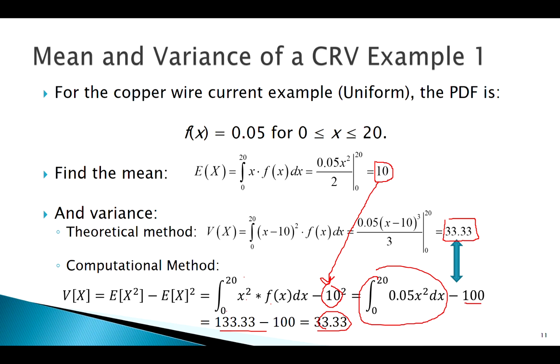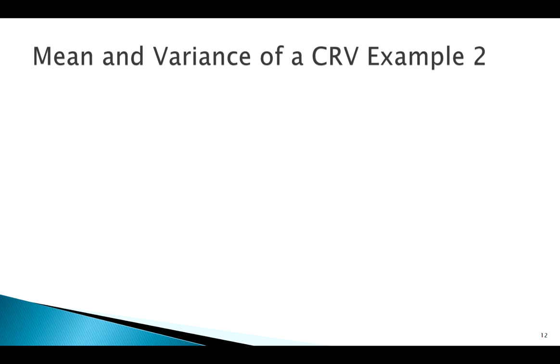It's not hard in this case because this is our uniform distribution, and notice your PDF is very simple because it's just a constant, at 0.05. But most cases, especially when your PDF gets a little more complicated, you're going to want to use that computational form. Let's look at a tougher PDF.